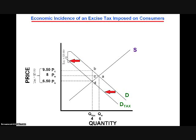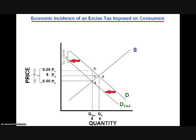How can we determine the revenue to government generated by this tax? We simply multiply the total output in the market with the tax, indicated as Q subscript tax, by the per unit amount of the tax, $3. In our hypothetical market, that would be $3 times the quantity 4, so tax revenue to government generated by this hypothetical excise tax is $12.